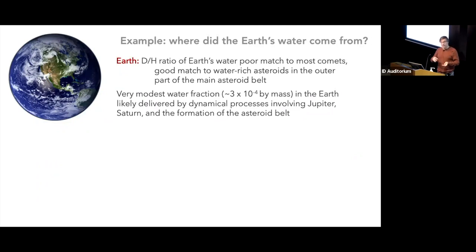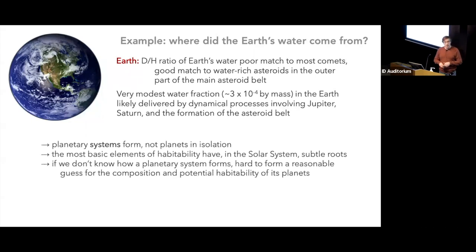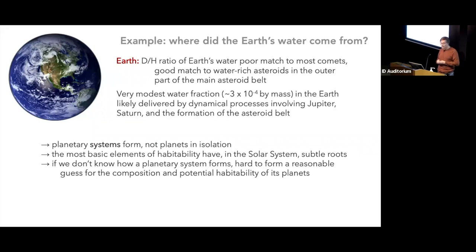The general expectation is that the relatively modest water fraction on Earth came from the outer region of the asteroid belt. At some point those asteroids were scattered into the inner solar system, hit the Earth perhaps at a late time, and contributed the Earth's water reservoir. This story has lessons for extrasolar planets, where we can't observe in nearly the same detail. One lesson is that we have to think about planetary systems — not planets in isolation — because beyond basic properties like mass, more complicated properties are closely interlinked with everything else in the system.